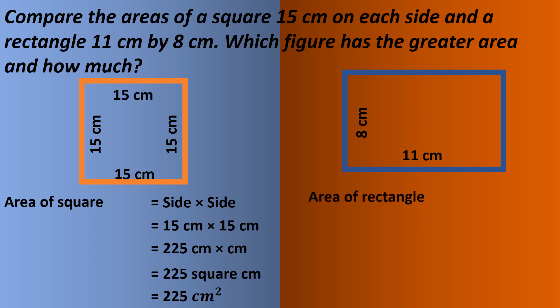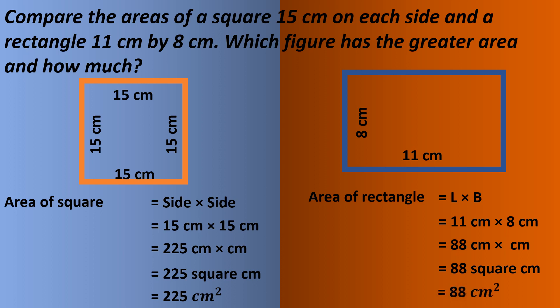Now find the area of the rectangle. Area of rectangle equals length into breadth. Putting the values: 11 centimeters into 8 centimeters equals 88 square centimeters. So which figure has the greater area? The square, because its area is 225 centimeter square, which is greater than 88 centimeter square.